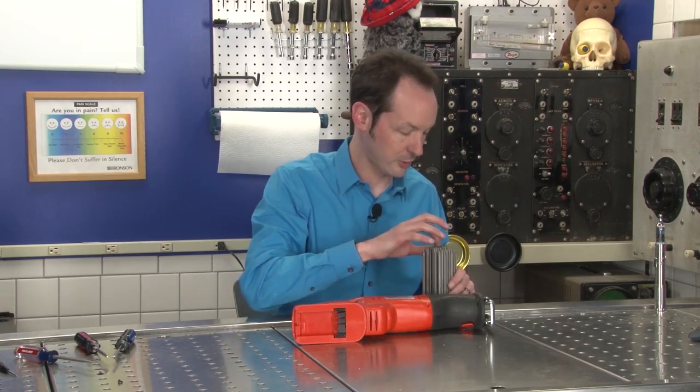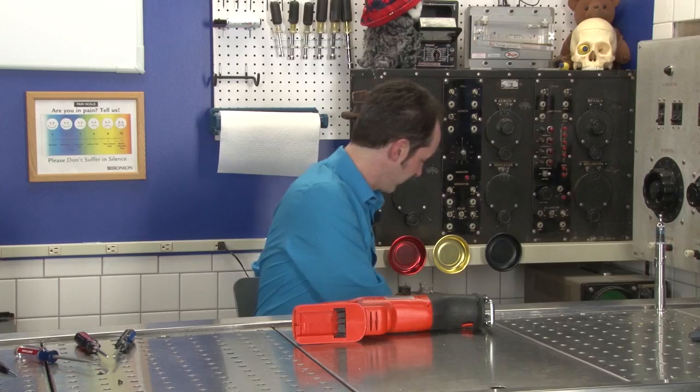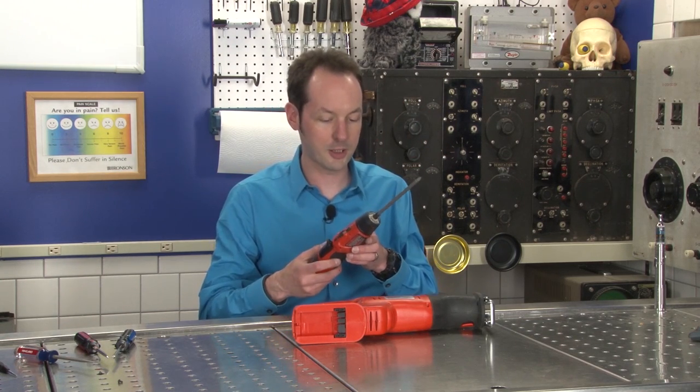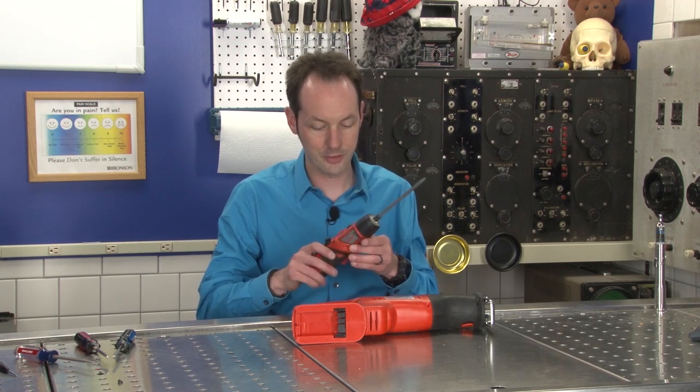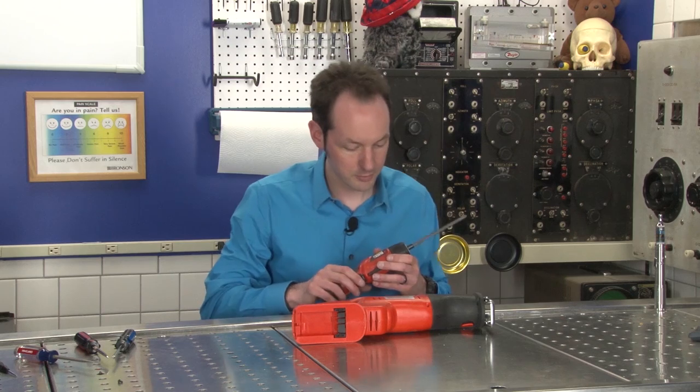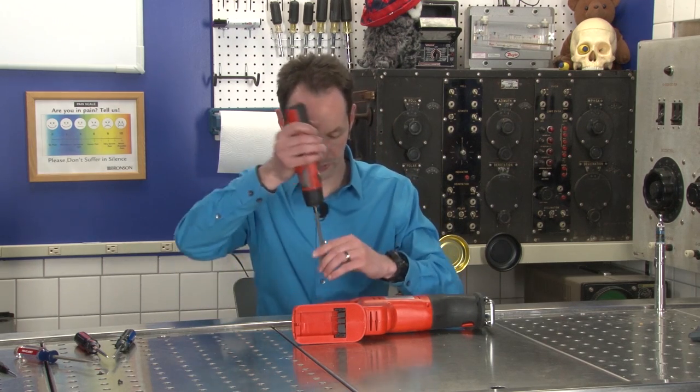So I think the best thing that we can do is take it apart. In an awesome bit of cannibalism I'm going to use my Black & Decker pivot driver to take apart the Black & Decker Firestorm. So here we go.